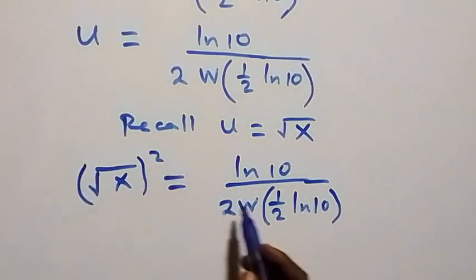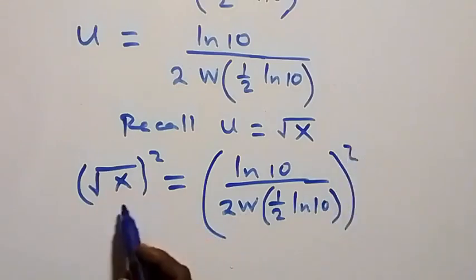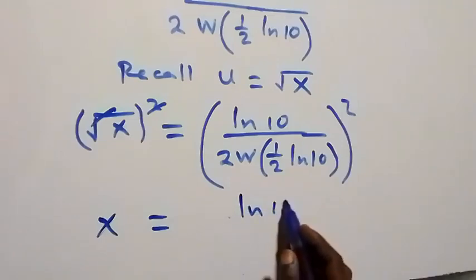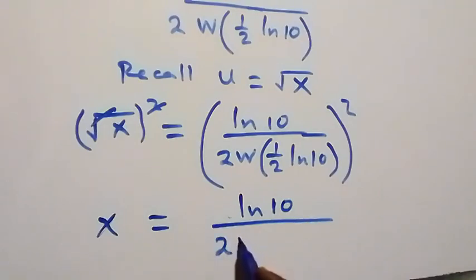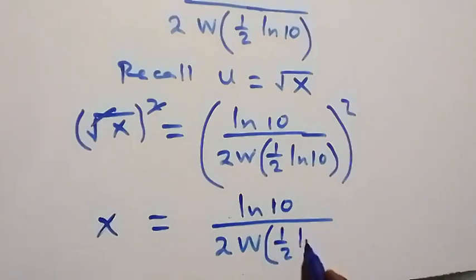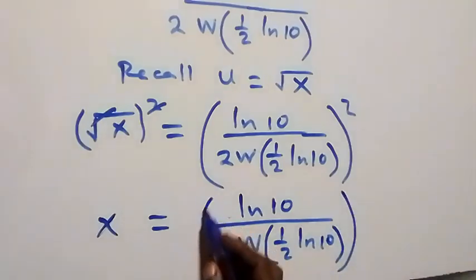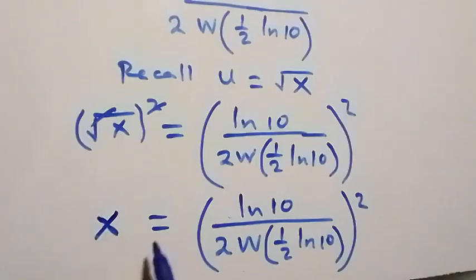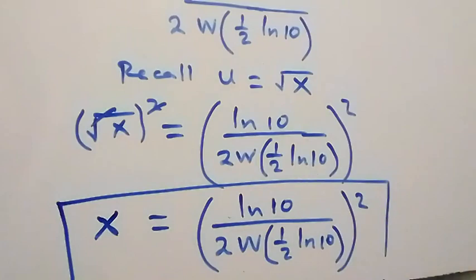Squaring both sides, the square cancels the square root on the left, giving x equals [ln 10 over (2·W(half ln 10))]², which is the final answer. We can also evaluate this using a calculator to get the decimal value of x.